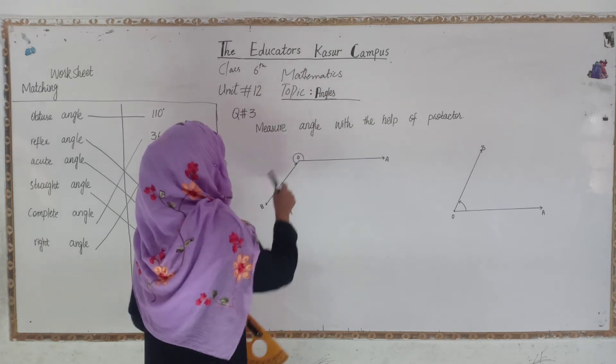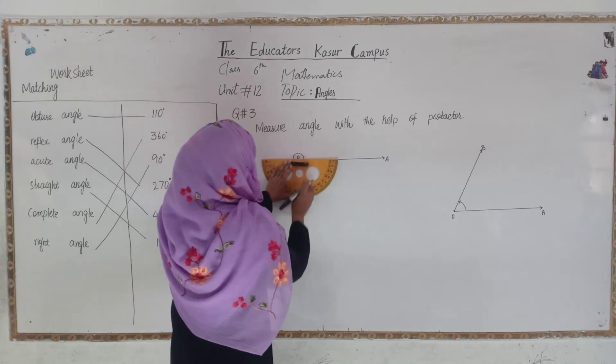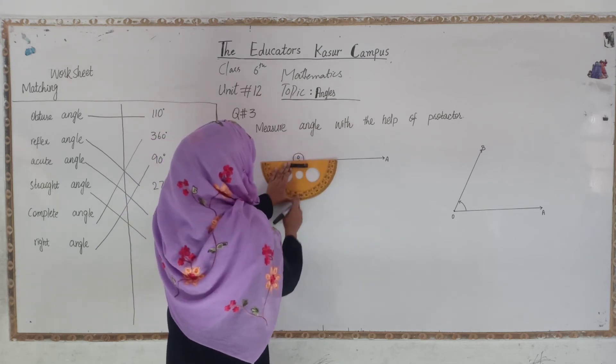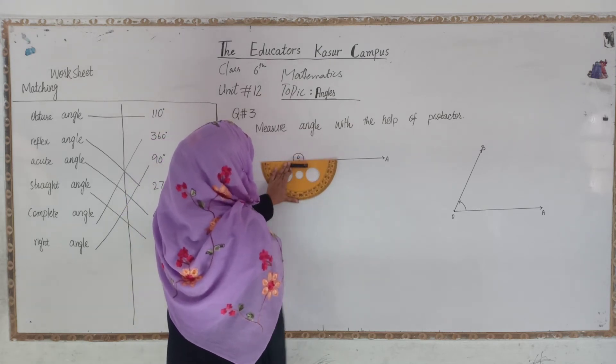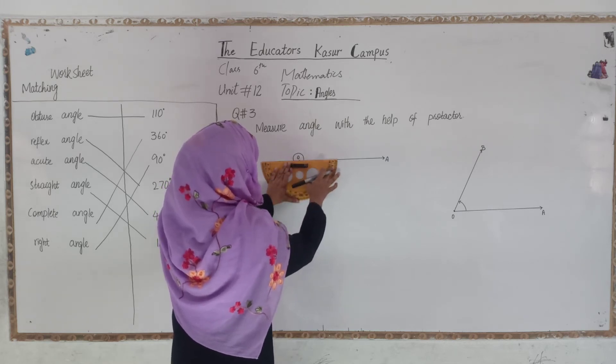First, you highlight the vertex, then you set the vertex. You will put your protractor in this way. The protractor's center line, which is 90 degrees, you have to put it on your vertex, and the protractor is straight.